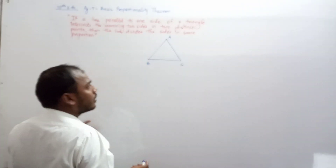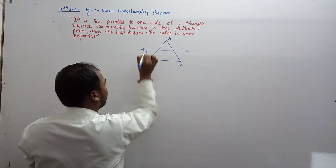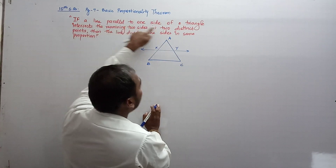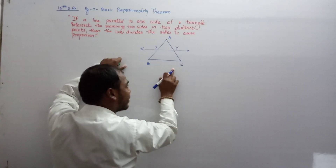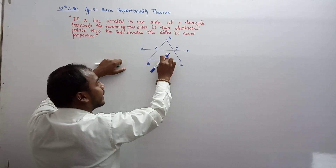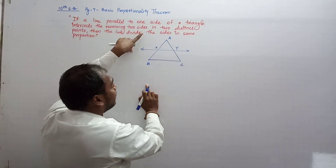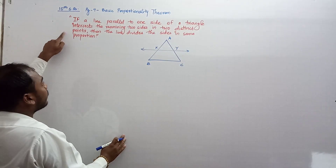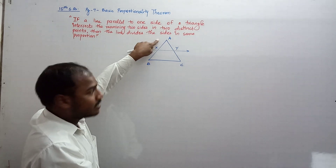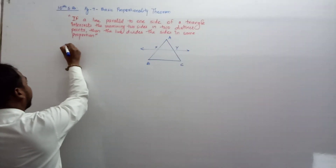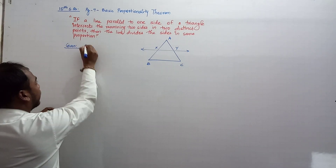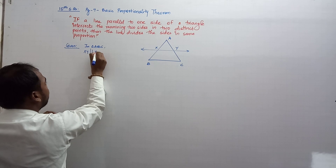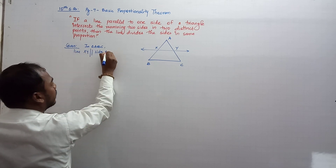You can take any one side and draw a line parallel to that side. Let's say we draw a line named XY. According to the statement, in triangle ABC, XY is parallel to side BC, and XY intersects the remaining two sides at two distinct points X and Y. So the Given is: in triangle ABC, line XY is parallel to side BC.